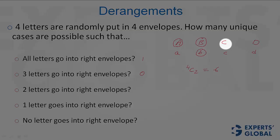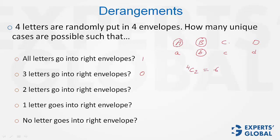And now, whatever the two are left, one letter has one choice of envelope, the wrong choice, and the other letter also has only one choice, 1. So, the answer is 6 × 1 × 1. The answer here is 6.